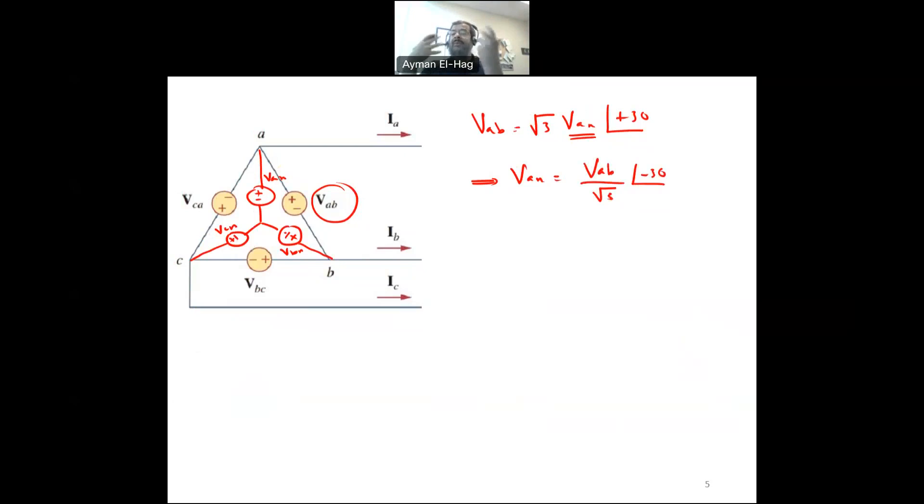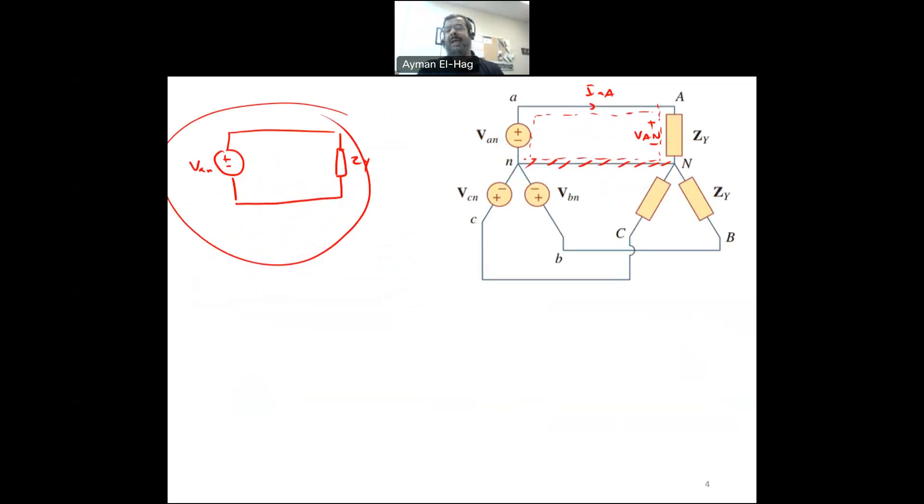Now, once I converted the delta connection into a Y-connection, I went back to the previous case, which is Y-Y-connection. So if the source is delta, then I will convert it into Y-connection, and then I will have the Y-Y-connection and isolate the phase and do like what we did in this example.